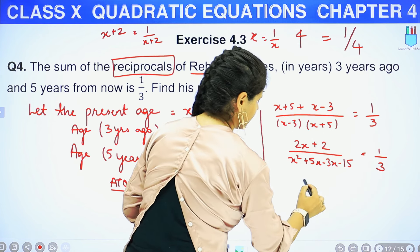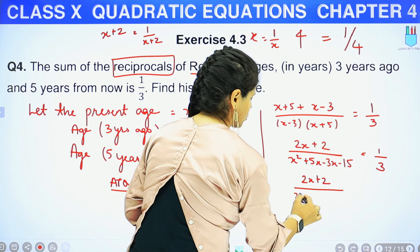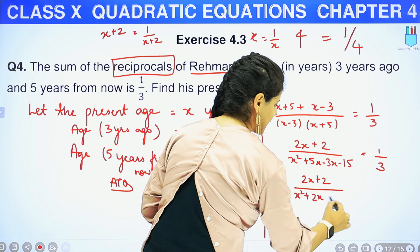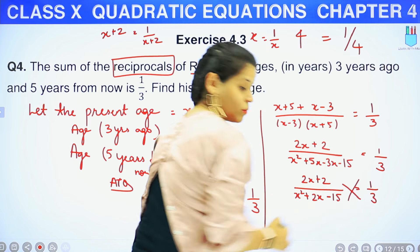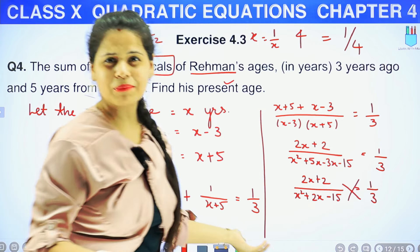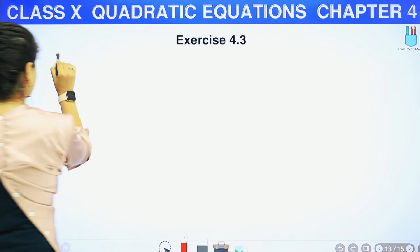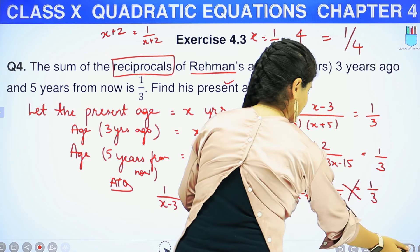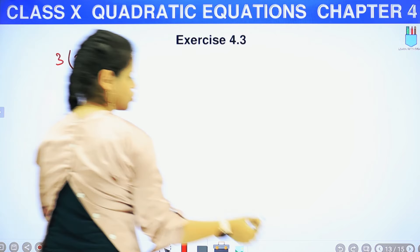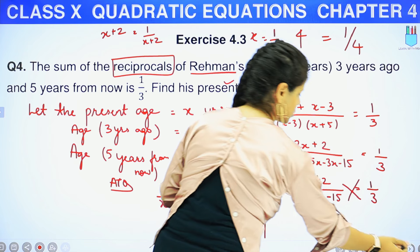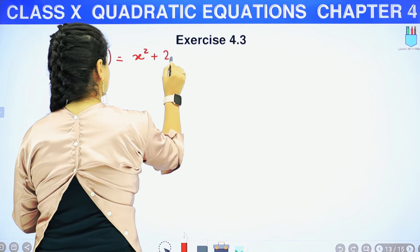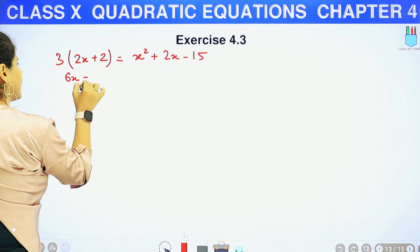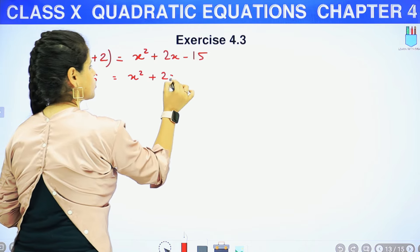Okay, let's continue. Cross multiplication करेंगे — 3 इसके साथ multiply होगा और 1 इसके साथ. So 3 multiply होगा (2X plus 2) से, equals to 1 multiply होगा (X² + 2X - 15) से. So: 3(2X + 2) = X² + 2X - 15. यह हो जाएगा 6X plus 6 equals to X² + 2X - 15.